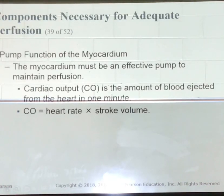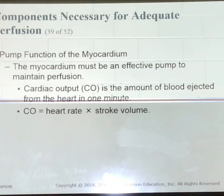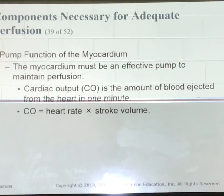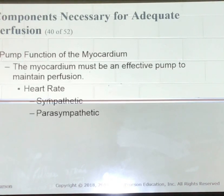To have an adequate blood pressure and perfusion, the myocardium must work effectively as a pump. The heart can vary in its output to meet a wide range of physiological demands. It can drastically increase its pumping function up to six times. The pump function is typically expressed as the cardiac output, defined as the amount of blood ejected by the left ventricle in one minute. The heart rate is defined as the number of times the heart contracts in one minute.